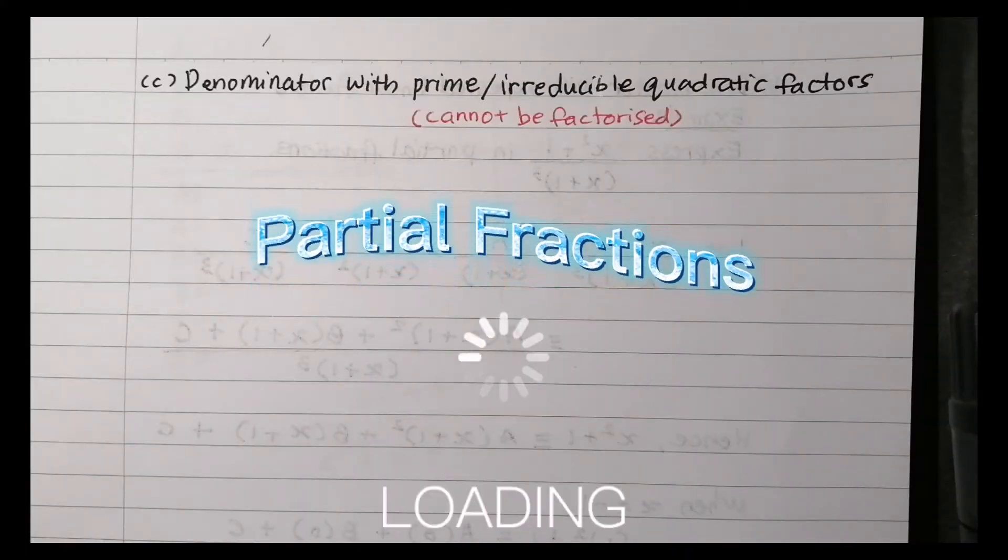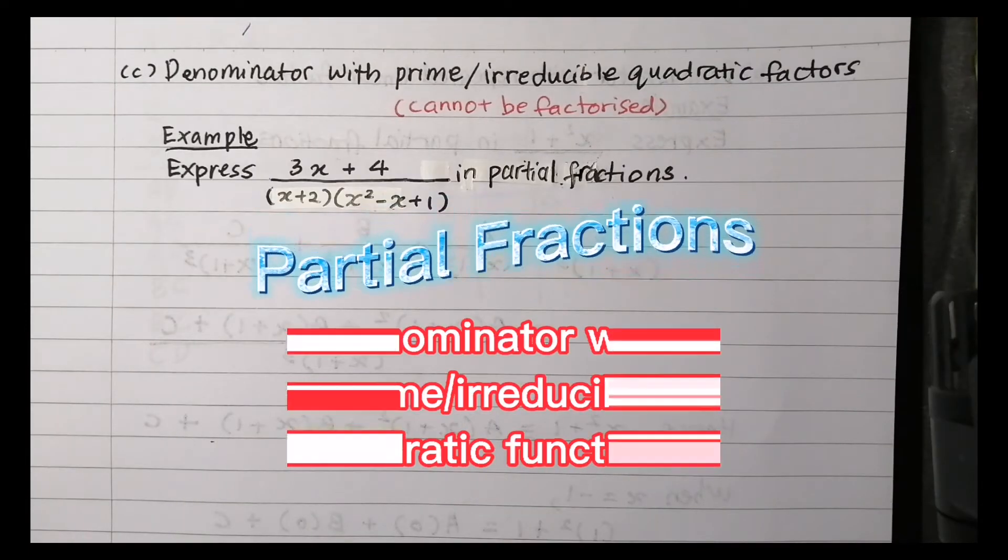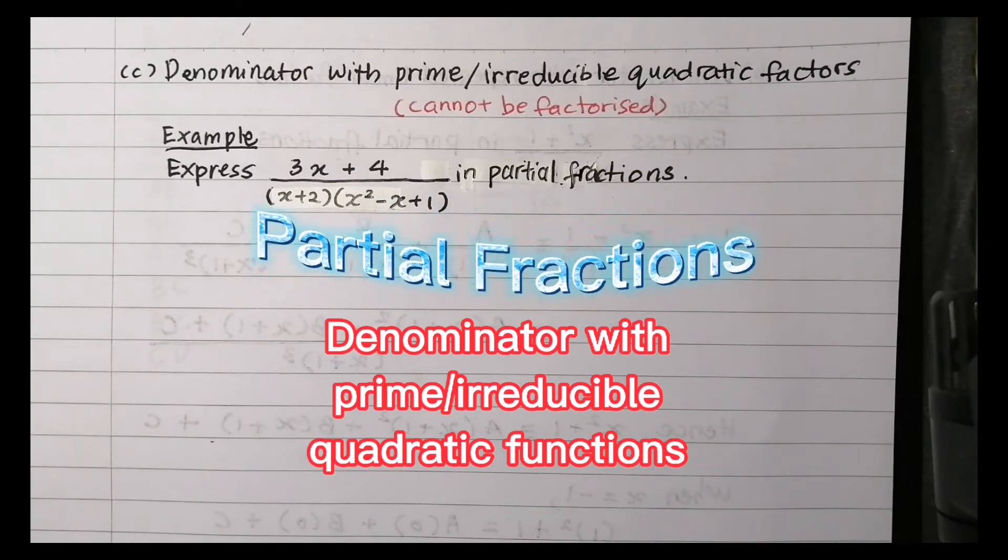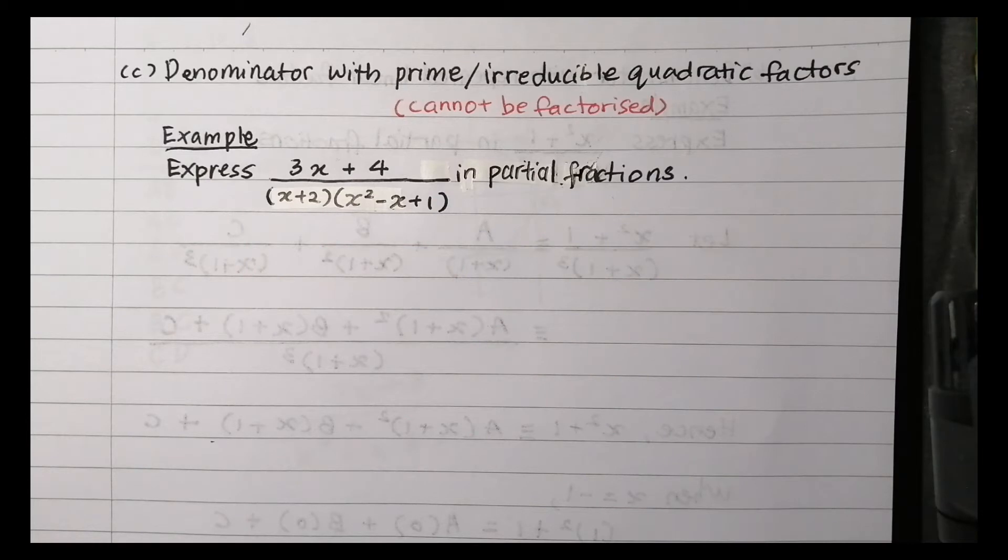Partial Fractions: Denominator with Prime or Irreducible Quadratic Functions. We are going to express the given rational function with denominator with prime or irreducible quadratic factors in partial fractions. Prime or irreducible quadratic factors means the quadratic factors cannot be factorized.